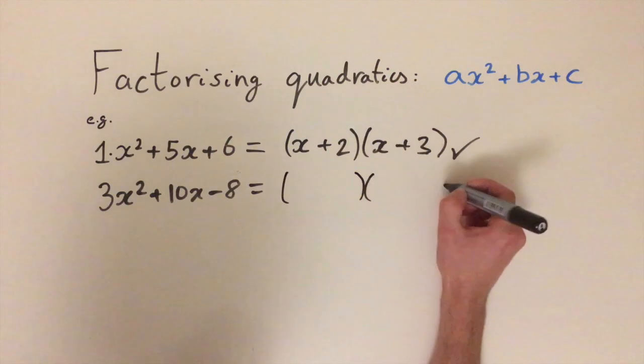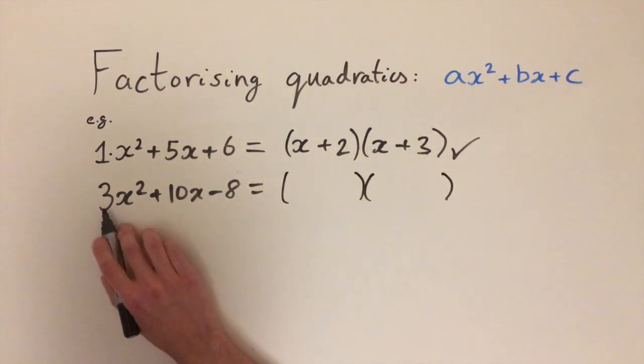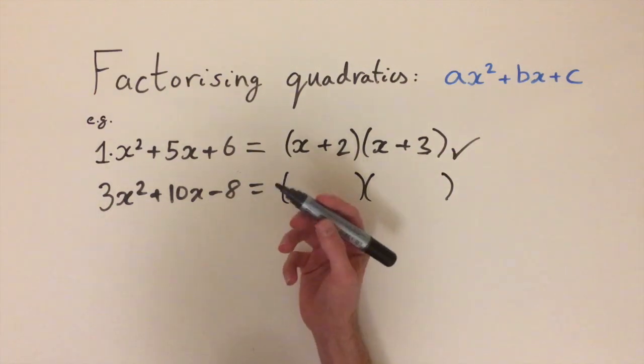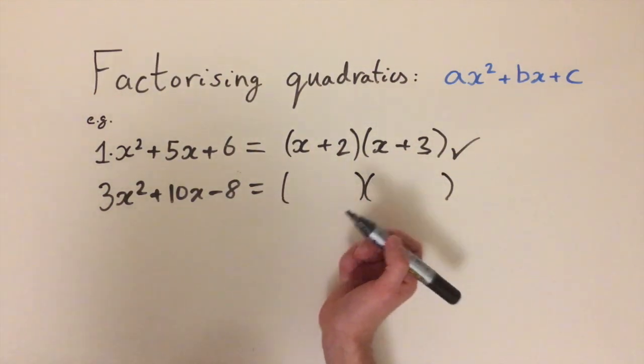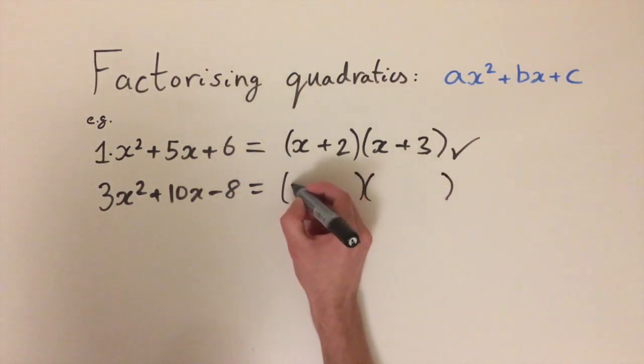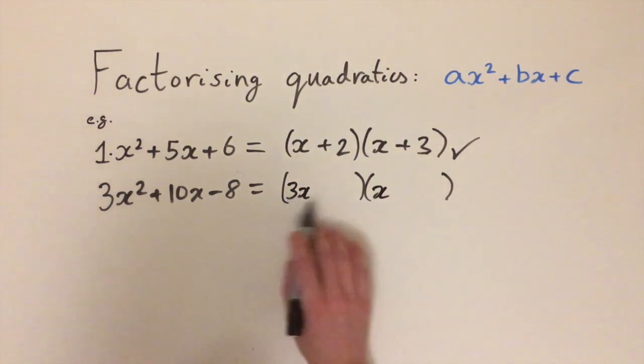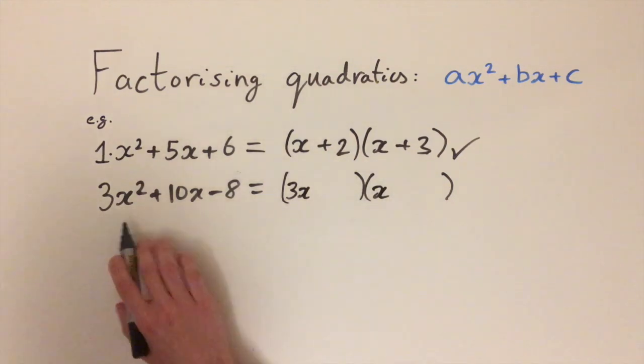So if we write these two brackets out first, then we need to write 3 as the product of two numbers. And luckily since 3 is a prime number we can only do this in one way: 3 times 1. So the first step is to write 3x and x, and you can see that when we multiply these two terms out we are going to get 3x squared.